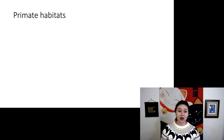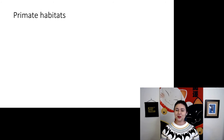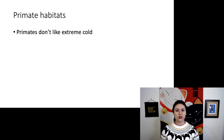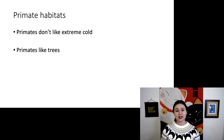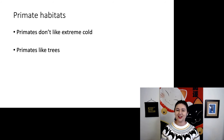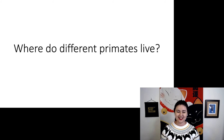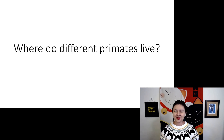To put this all together, primates are pretty widespread and there are a lot of different habitats, but some conclusions we can draw: they don't like the extreme cold. Sure, some of them live in snowy regions, but you don't find them in Russia. Primates do like trees no matter where they are — some live in areas where there are fewer trees, but by and large primates are arboreal. Overall, most primates do live in the tropics. So can you explain where different primates live?